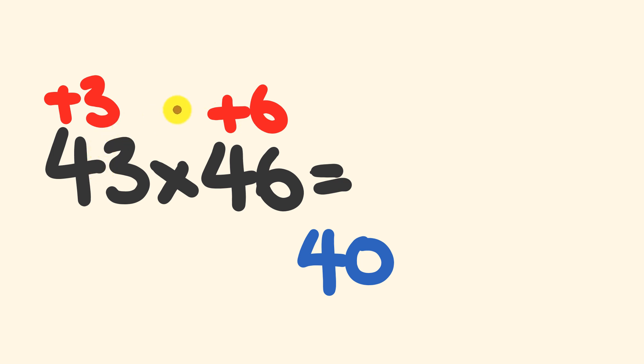The next thing we do, we either add 43 to the 6 here or 46 to 3. It gives us the same value. 43 plus 6 gives us an answer of 49. We're now going to use this to get the first part of our answer. And to get the first part of our answer, we get our 49 and we multiply it by this tens value of 40. So 49 multiplied by 40.